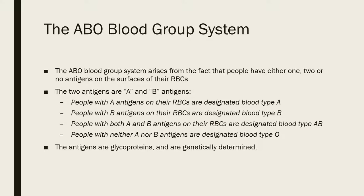The ABO blood group system arises from the fact that people have either one, two, or no antigens on the surfaces of their red blood cells. There are two antigens involved: A antigen and B antigen. People with A antigens are blood type A; those with B antigens are blood type B; those with both are blood type AB; and those with neither are blood type O.